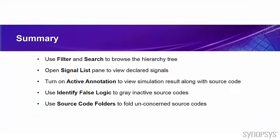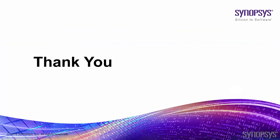Now let's review what we have learned from this video. Firstly, we know how to use the filter and search to browse the hierarchy tree. Then we know how to open the signal list pane to view the declared signals under a specific scope. We also learned how to turn on annotation to view the simulation result along with the source code. Then we talked about how to use identify false logic to gray out inactive source code. Finally, we learned how to use source code folders to fold unconcerned source code. This is the end of the video. Thank you for your time.